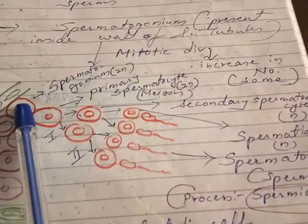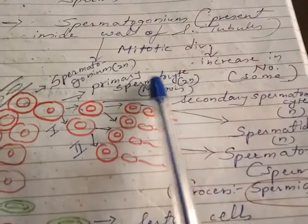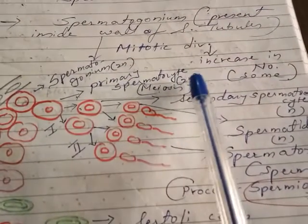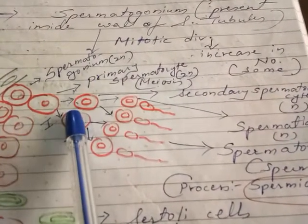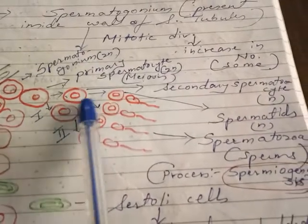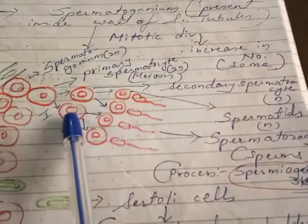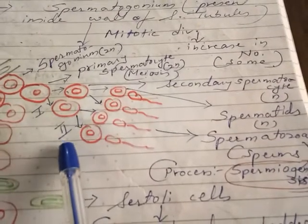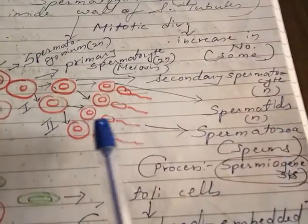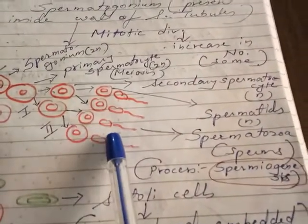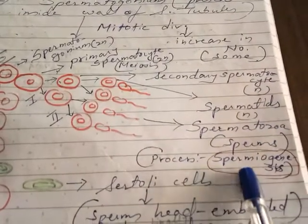Spermatogonia undergo mitotic division giving rise to the primary spermatocyte, which is also 2N — diploid. This primary spermatocyte undergoes the first meiotic division giving rise to the secondary spermatocyte, which becomes haploid. This secondary spermatocyte undergoes the second meiotic division giving rise to 4 spermatids, which then produce spermatozoa or sperm through the process called spermiogenesis.